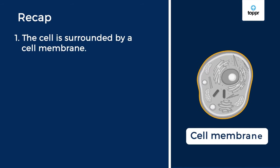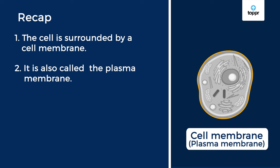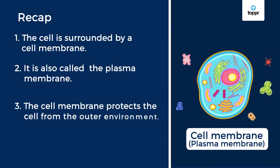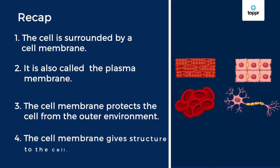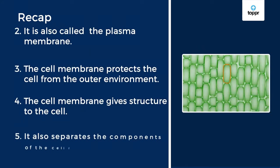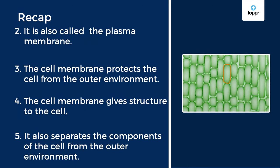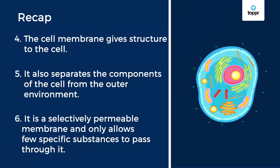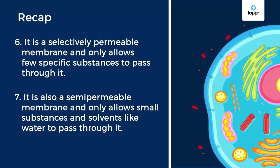Now let's quickly recap what we have learned. The cell is surrounded by a cell membrane, also called the plasma membrane. The cell membrane protects the cell from the outer environment and gives structure to the cell. It separates the components of the cell from the outer environment. It is a selectively permeable membrane, allowing only specific substances to pass through, and also a semi-permeable membrane, allowing only small substances and solvents like water to pass through. I hope you now understand what cell membrane is and how it plays a key role in carrying out vital functions.